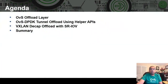I'll start with OVS Offload Layered Description, then I'll go over OVS DPDK Tunnel NCAP DCAP Offload, how that is done using Helper API, and then I'll talk about a specific example showing the sequence of VXLAN DCAP Offload, and then summarize the talk.